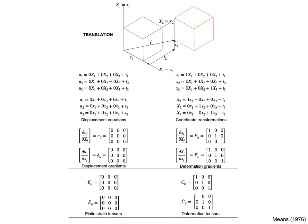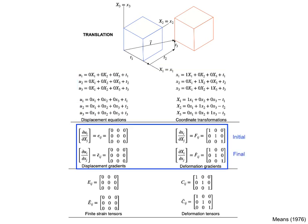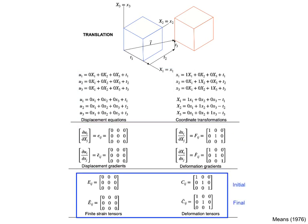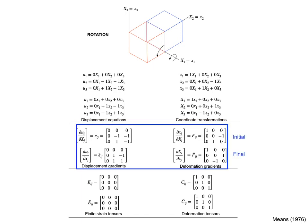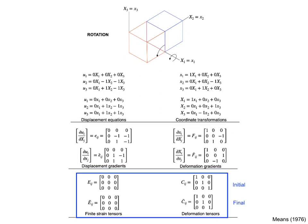Now let's look at rigid body rotation. The displacement equations and coordinate transformations are more complicated, as are the displacement gradients and deformation gradients, which are no longer zeros or the identity matrix. However, the finite strain tensors are zero and the deformation tensors are equal to the identity matrix. This makes sense, since rotation does not involve strain.